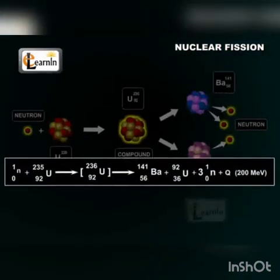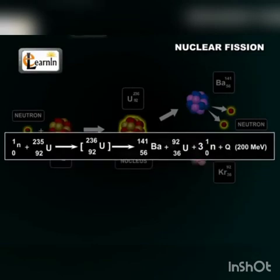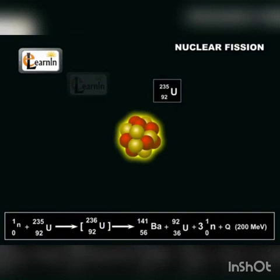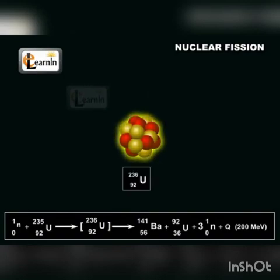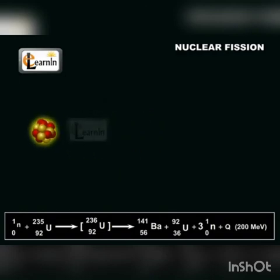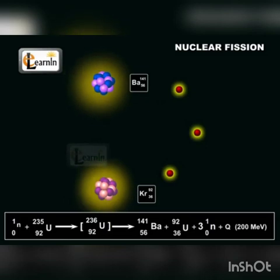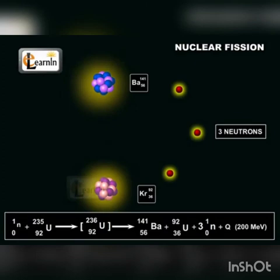The chemical equation of the nuclear fission reaction taking place can be represented by this equation. As you can see from the equation, one neutron combines with uranium-235, forming an unstable compound nucleus, uranium-236. This unstable nucleus splits into two stable nuclei, barium-141 and krypton-92. In addition to these two nuclei, three neutrons are also emitted, as well as a high amount of energy, denoted in the equation by Q.